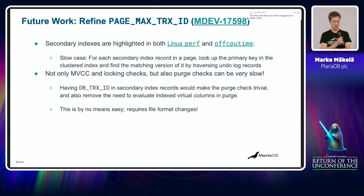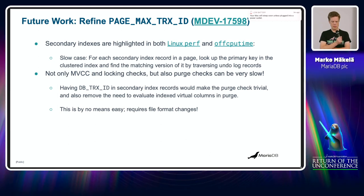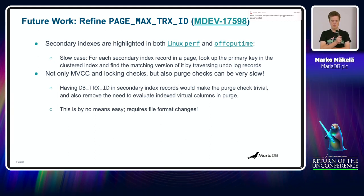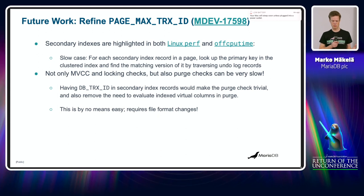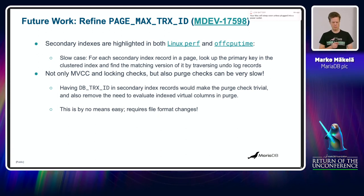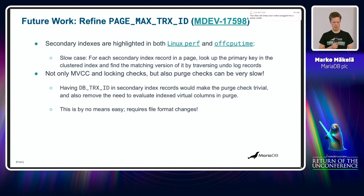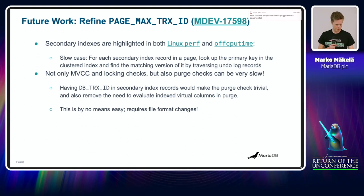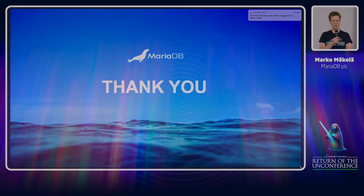For future work on secondary index pages, I think we should introduce a record transaction ID in secondary index records. This would allow purge to avoid looking up the primary key for each secondary index record — it could just get the transaction ID from the record and be done. However, this requires a file format change, which is why I have been reluctant to do it. Thank you, that's the end of my talk.